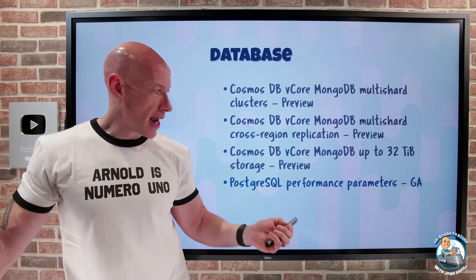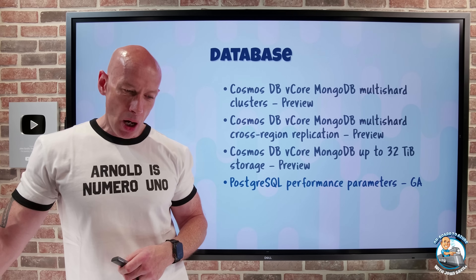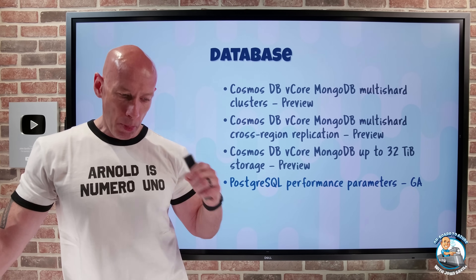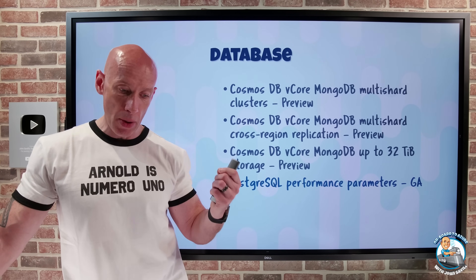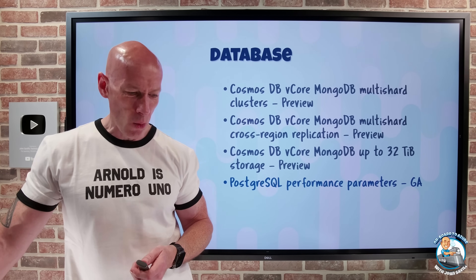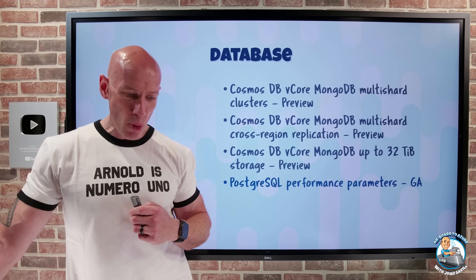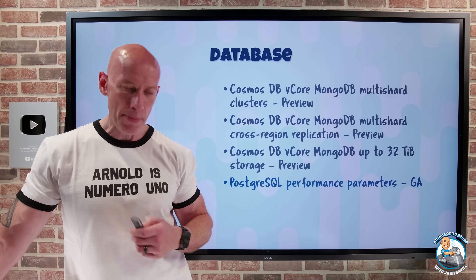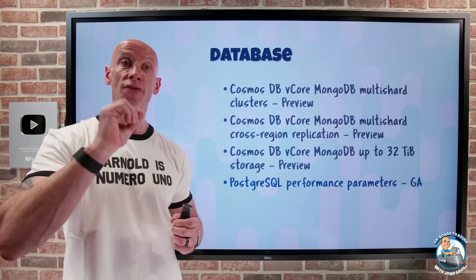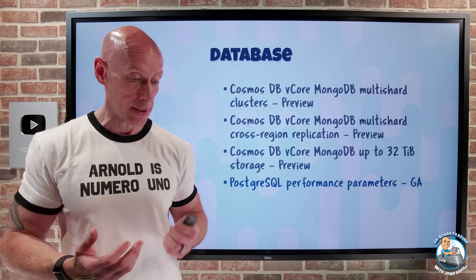PostgreSQL now has exposed a number of performance parameters in GA. For example, the maximum number of parallel apply workers per subscription. There are a bunch of other things like temp file limits, logical decoding, work memory, idle session timeouts, enable incremental, log hostname — so you can configure those. That's one of the nice things about Flexible: you get far more access to a whole bunch of configurable parameters.